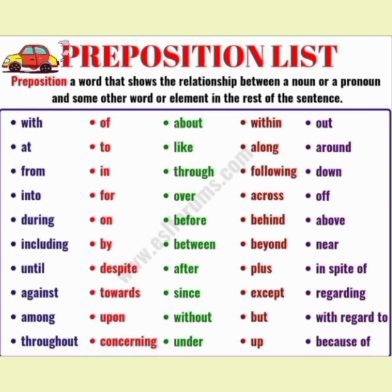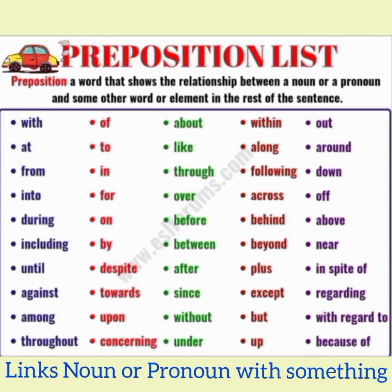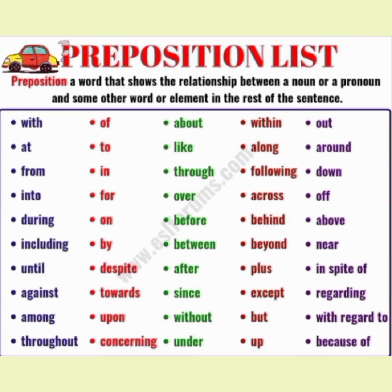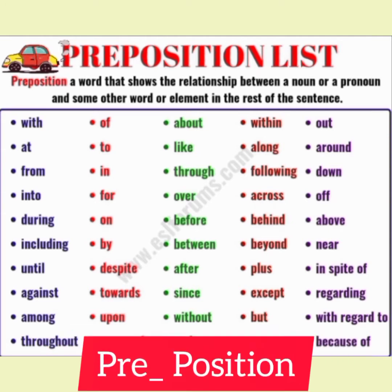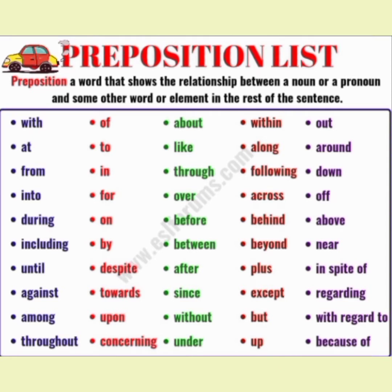First of all, what is a preposition? A preposition is a word that shows the relationship between a noun or pronoun and some other word or element in the rest of the sentence. Prepositions basically linking words hootay hain, joh noun ya pronoun ka kisi cheeze ke sath relation show keretay hain, and they are always placed before a noun or pronoun. Agar aap prepositions ko separate kerayin — pre-position — it is derived from two words: pre and position. Pre means 'before' — position rakhna — toh isi noun ya pronoun se pehle rakhte hain.